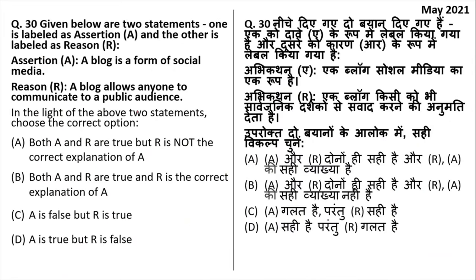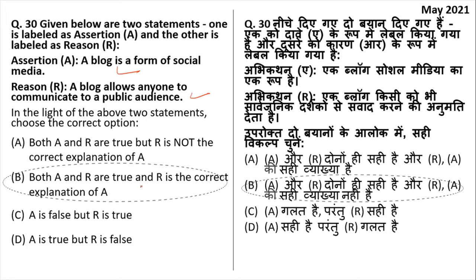Assertion: a blog is a form of social media — true. Reason: a blog allows anyone to communicate to a public audience — also true. Both assertion and reason are correct and R is the correct explanation of A. B is the right answer.